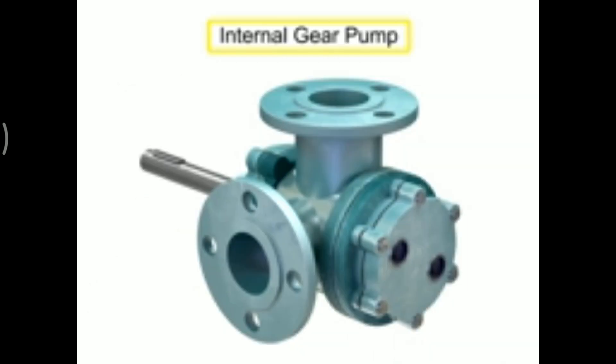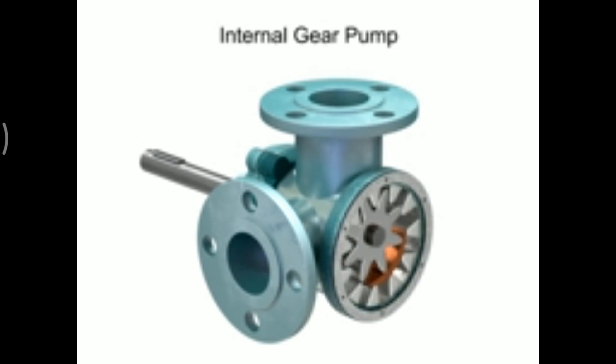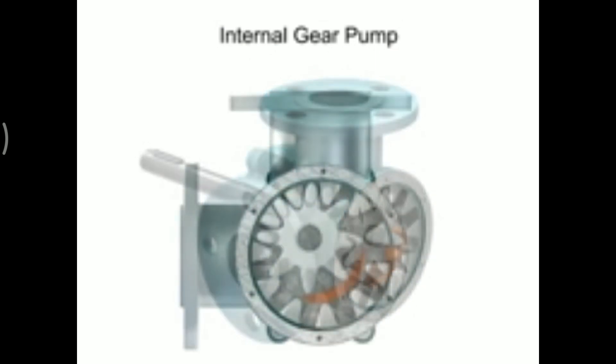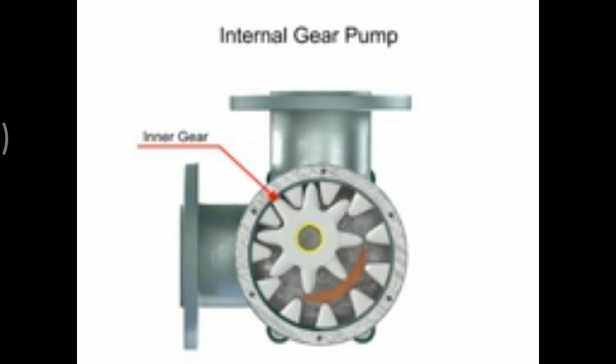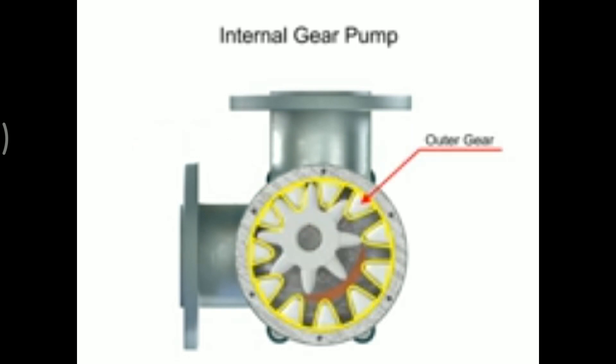Internal gear pumps are exceptionally versatile. This type of pump has one inner gear which is inside a second outer gear. The inner gear has a shaft driven by a motor and has teeth that protrude outward. The outer gear has teeth that protrude inward toward the center of the pump.